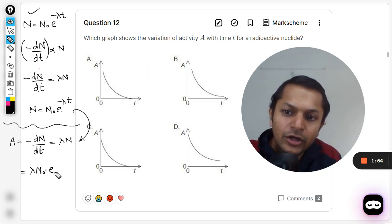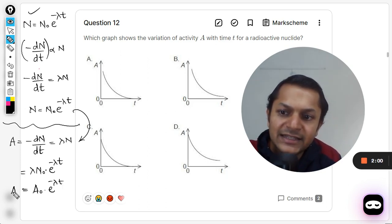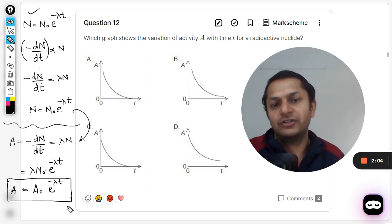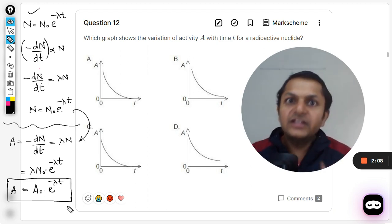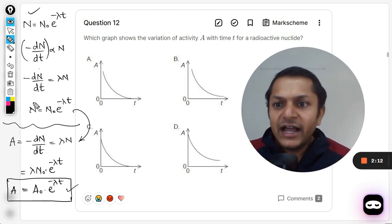It becomes lambda N₀ e raised to power minus lambda t, which can be written as A₀ e raised to power minus lambda t. Clearly we have created another function. We have just derived the formula for the activity with respect to time t.